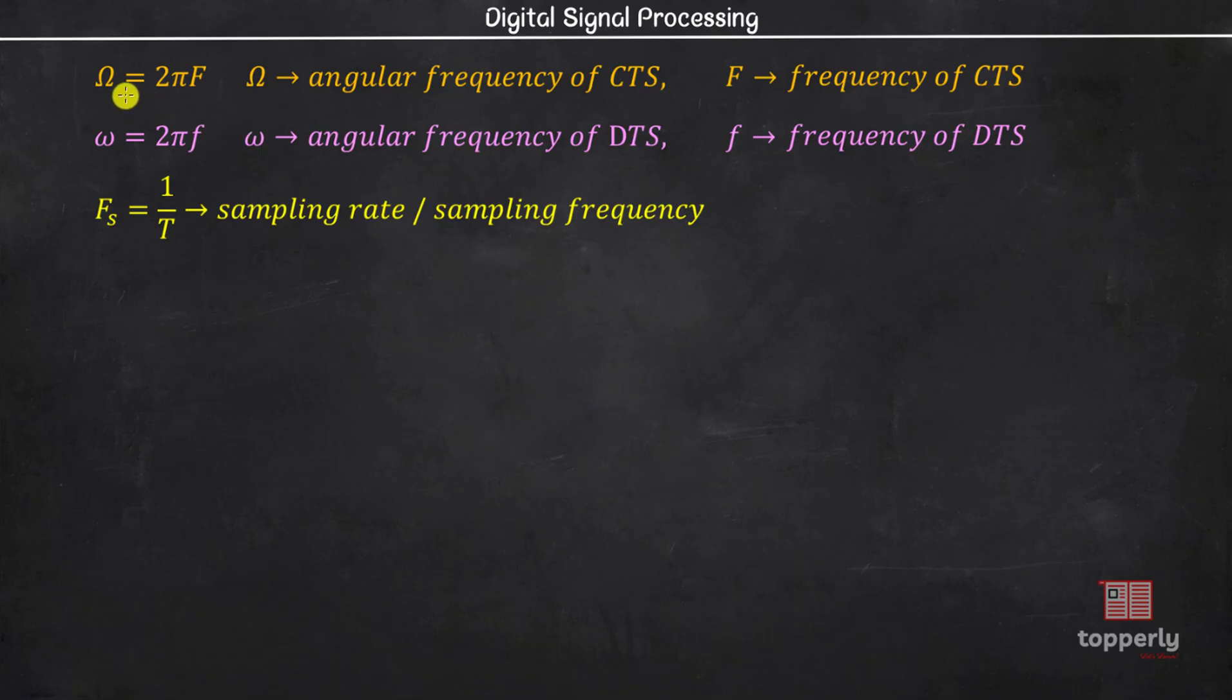We also know the relations capital omega equal to 2π into capital F, where capital F is the frequency of continuous time signal in Hertz or cycles per second. Similarly, we have small omega equal to 2π into small f, where small f is the frequency of discrete time signals. We also have Fs which is the sampling frequency. Now let us find the relationship between these three frequencies.